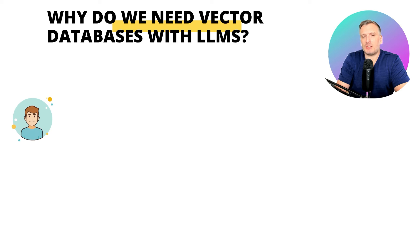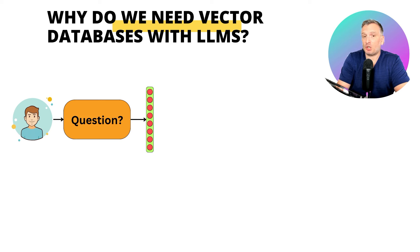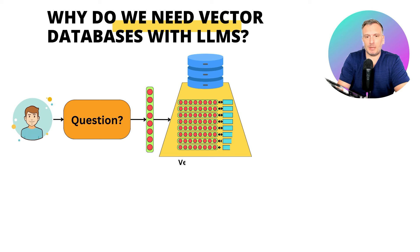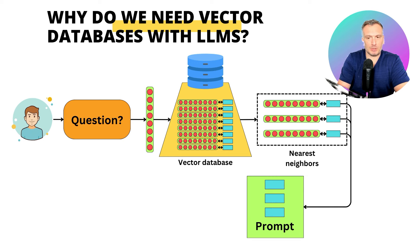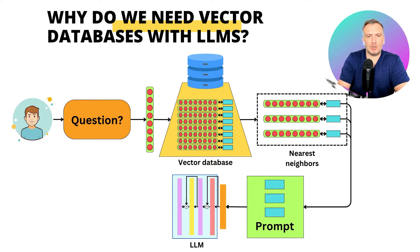Let's say that a user asks a question. That question is then encoded into a vector representation. That vector representation can be used as a query to a vector database. The vector database is then going to return the nearest neighbors, and the data related to those nearest neighbors can be used in a prompt that can be fed into an LLM to get the answer to the question.